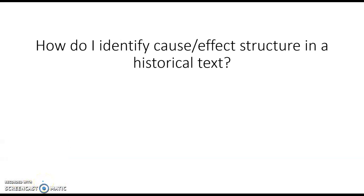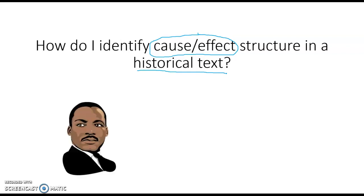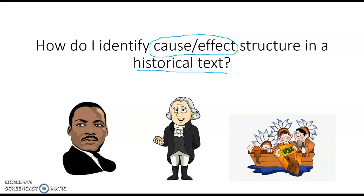Your lesson essential question is: how do I identify cause-effect structure in a historical text? We're looking at cause and effect today as a text structure in historical texts. Last week we talked about sequence as a text structure and the order of events. A historical text is a text that tells us about something from the past—it might be about a person or an event from history.